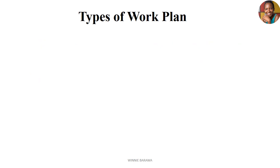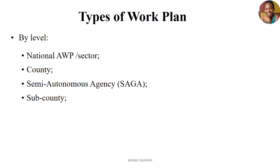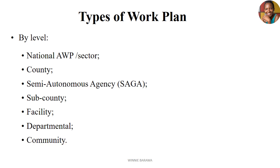When it comes to types of annual work plans, we need to appreciate that in our different organizations or leadership structures, work plans can be categorized based on the tier of healthcare delivery. We can have the national annual work plan, the county level — in Kenya we use county governments — semi-autonomous agencies, the sub-county level, facility level, departmental level, and also the community level.